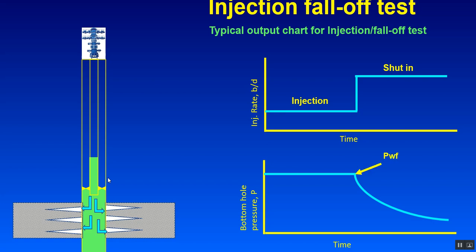The last injection pressure is called bottom hole injection pressure or bottom hole flowing pressure. And this is the fall-off pressure decline. Let's go for practical use.